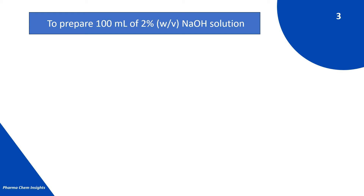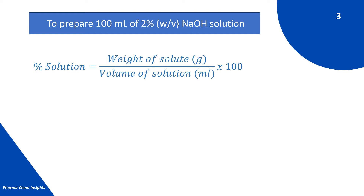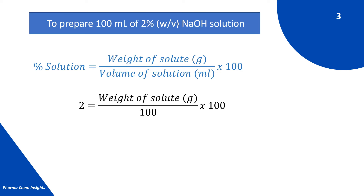Let us see with an example — to prepare 100 ml of 2% weight by volume NaOH solution. According to the formula, percent solution equals weight of solute in grams divided by volume of solution in ml, multiplied by 100. So we put in the values: 2 equals weight of solute in grams divided by 100 ml, multiplied by 100.